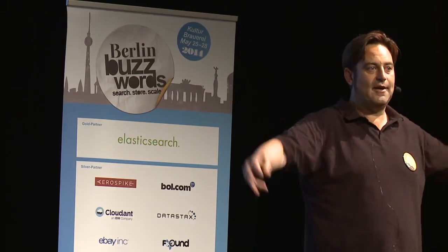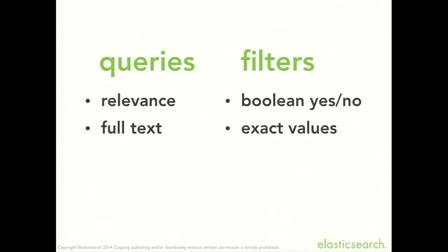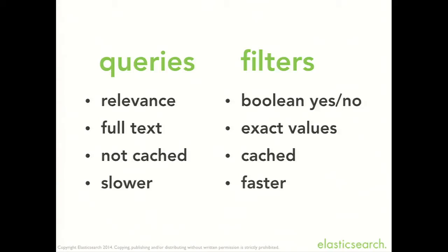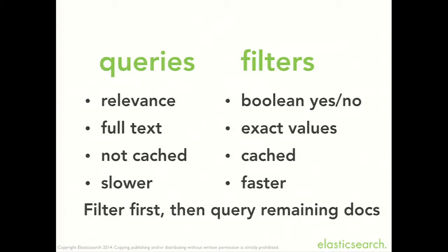The score can be any floating point number in the positive range. Filters you tend to use for exact values — numbers, dates, and so on. For strings, where status equals active would be a typical example of where you'd use a filter. Queries are really for full text, like looking for the quick brown fox in the body of an email. Because of the simple nature of filter results, it's easy to cache — it can be represented in a very small amount of space. So filters can be cached, making them really fast. Queries can't be cached, and the result is that filters are typically faster. What you want to do is filter out everything you can at the beginning, then just run the queries on the documents that remain.